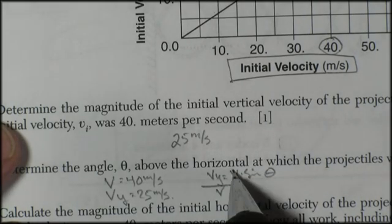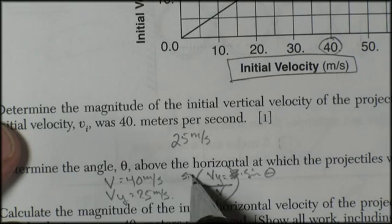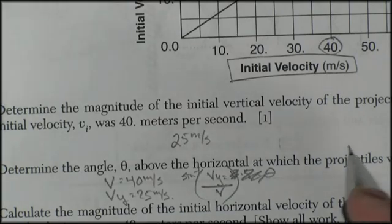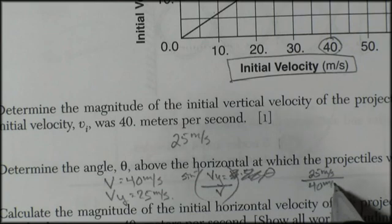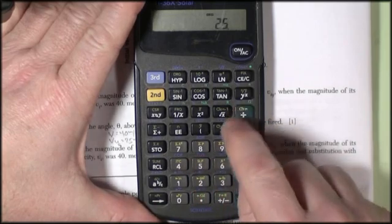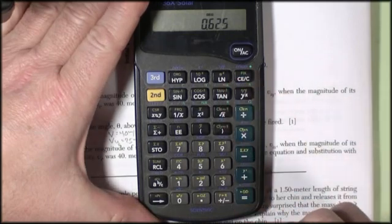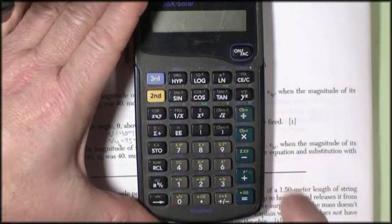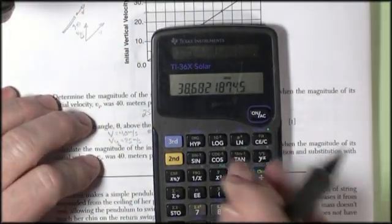Divide both sides by velocity to get sine of the angle by itself, then take the inverse sine. So it's going to be 25 meters per second divided by 40 meters per second, and then take the inverse sine of that. 25 divided by 40 equals 0.625, and that's the sine of our angle. If we take inverse sine, that gives us our angle, and I'm getting about 38.6 degrees.